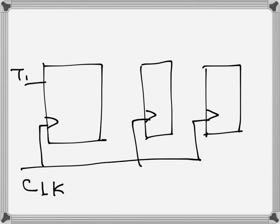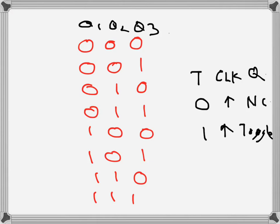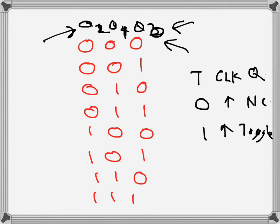Let me label these properly. This will be Q2, Q1, and Q0, because this is the most significant and this is the least significant. So this will be T2, this will be T1, and this will be T0.